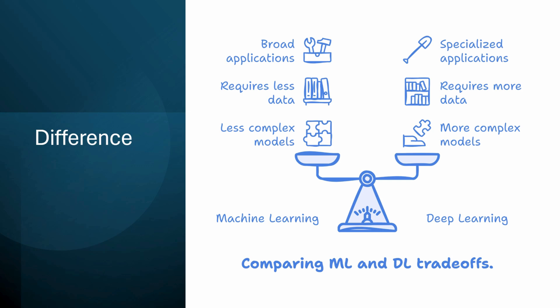In contrast, deep learning algorithms, including CNNs, RNNs, and LSTMs, automatically discover features from raw data, enabling them to handle more complex tasks, especially when dealing with large and unstructured data sets.